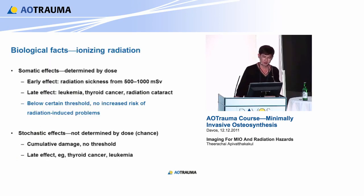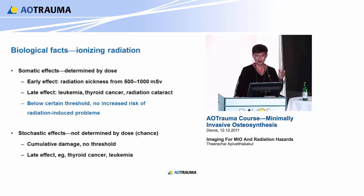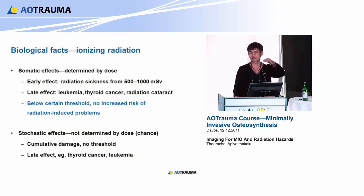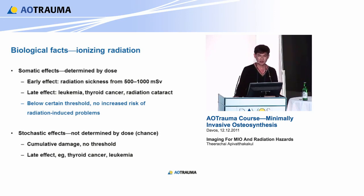How about the effects? The somatic effect is determined by the dose. If you have an early effect, this is radiation sickness. The late effect includes leukemia, thyroid cancers, and radiation cataracts. But if you are below these levels, there is no increased risk. Another is the stochastic effect - it's accumulative. Every day you use X-rays, it's in your body. If it exceeds a threshold, then you have a problem. For genetics, there is a mutagenic effect already shown in animals, and a teratogenic effect for young ladies during gestation, around 10 millisieverts.